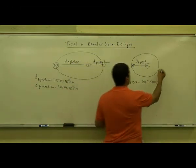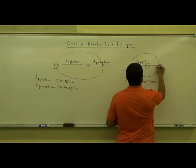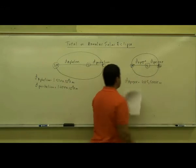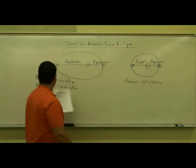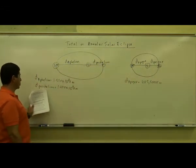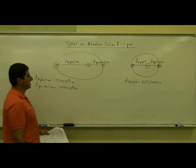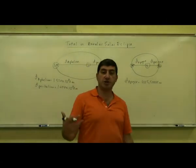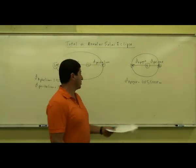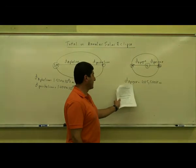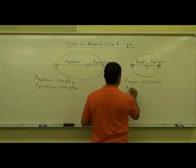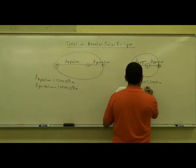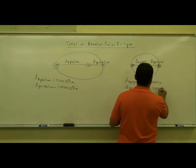When the Moon is close to us, it's called Perigee. Notice the words Apogee and Perigee — the suffix '-gee' comes from the word 'geo,' as in geography, referring to Earth. So when the Moon is far from the Earth, that's Apogee, and the Perigee distance is 363,300 kilometers.